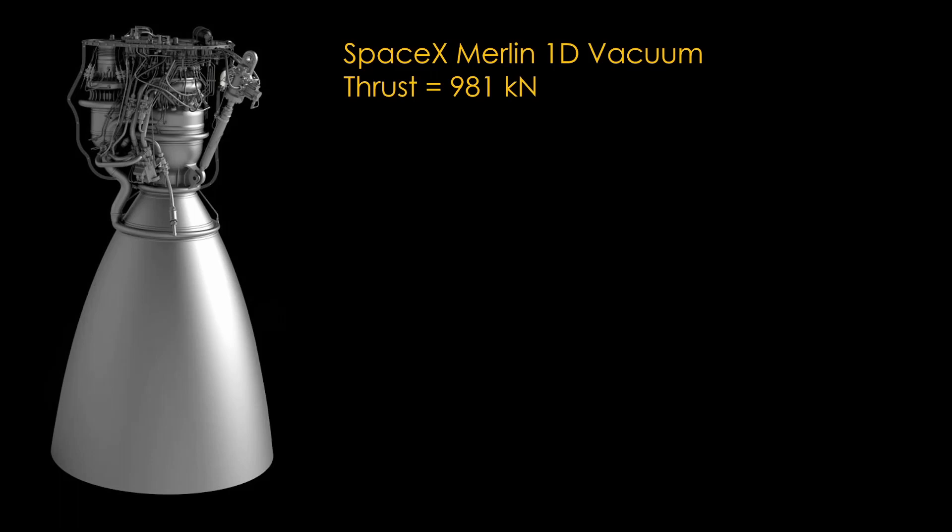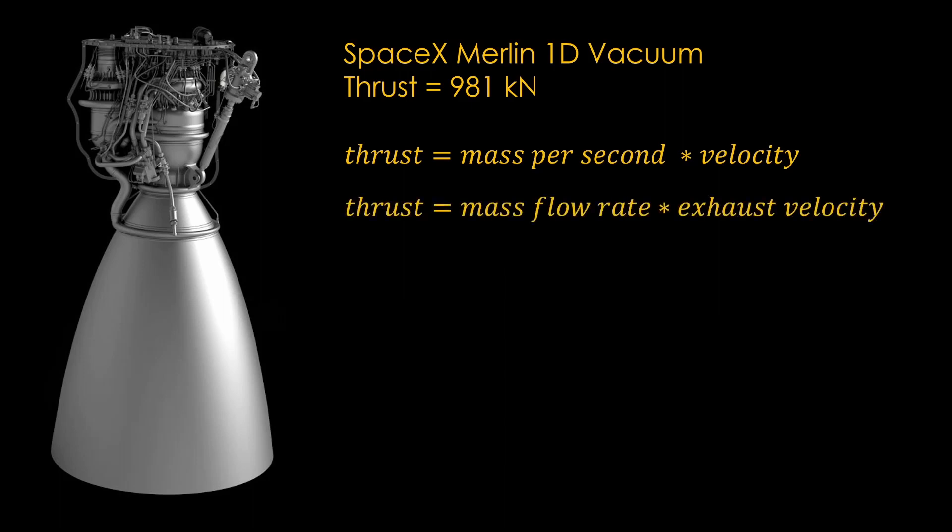How does this relate to actual rockets? It helps to look at an example. Let's say we want to figure out how long it takes a rocket to burn through the propellant it carries. The SpaceX Merlin 1D vacuum engine has a thrust of 981 kilonewtons. We know that thrust is equal to the mass per second times the velocity of that mass. In rocket terms, we would call that the mass flow rate times the exhaust velocity. But all we know is the thrust, so how can we use this equation? It actually turns out that we do know the exhaust velocity, or we know how to figure it out.